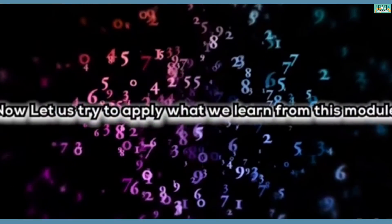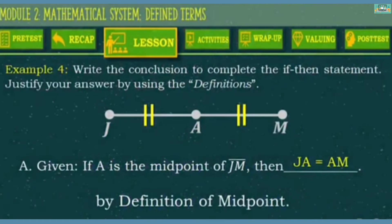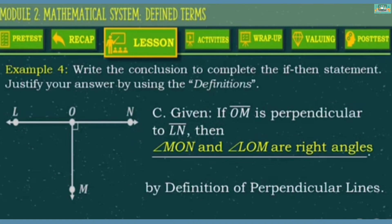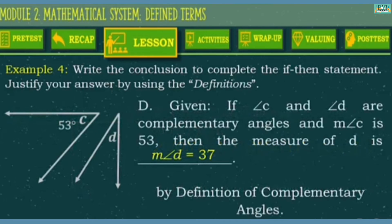Now, let us try to apply what we learned from this module. Write the conclusion to complete the if-then statement and justify your answer using the definitions. A: If A is the midpoint of JM, then JA is equal to AM, by the definition of midpoint. B: If angle TSU and angle TSV form a linear pair, then they are adjacent angles, by the definition of linear pair. C: If line segment OM is perpendicular to line segment LN, then angle MON and angle LOM are right angles, by the definition of perpendicular lines. D: If angle C and angle D are complementary angles and the measurement of angle C is 53, then the measurement of angle D is 37, by the definition of complementary angles.